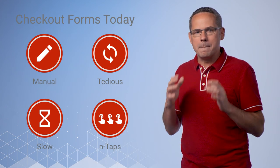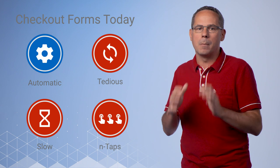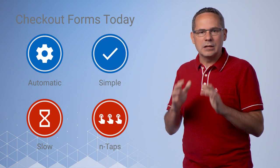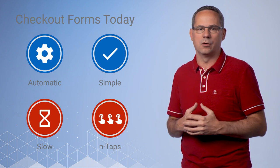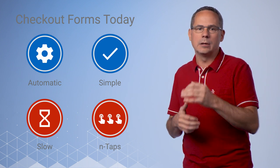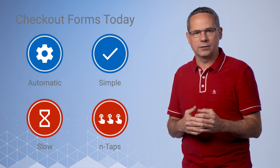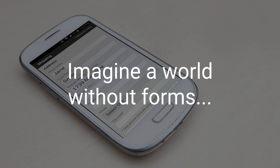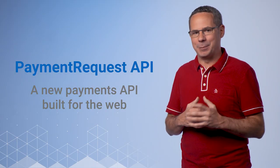Autofill gets rid of the manual nature of data entry and makes it much simpler for the user. However, it's still fundamentally based on the same kind of existing checkout flow — entering a lot of data, usually in multiple pages. The web checkout process needs to be reinvented. The current checkout experience presents you with a form to fill out every single time. For users, the ideal experience would be that when it's time to buy, they just buy. Sites should be able to focus on creating an amazing and engaging shopping experience without worrying about optimizing a long checkout form. This is where the new Payment Request API comes in.